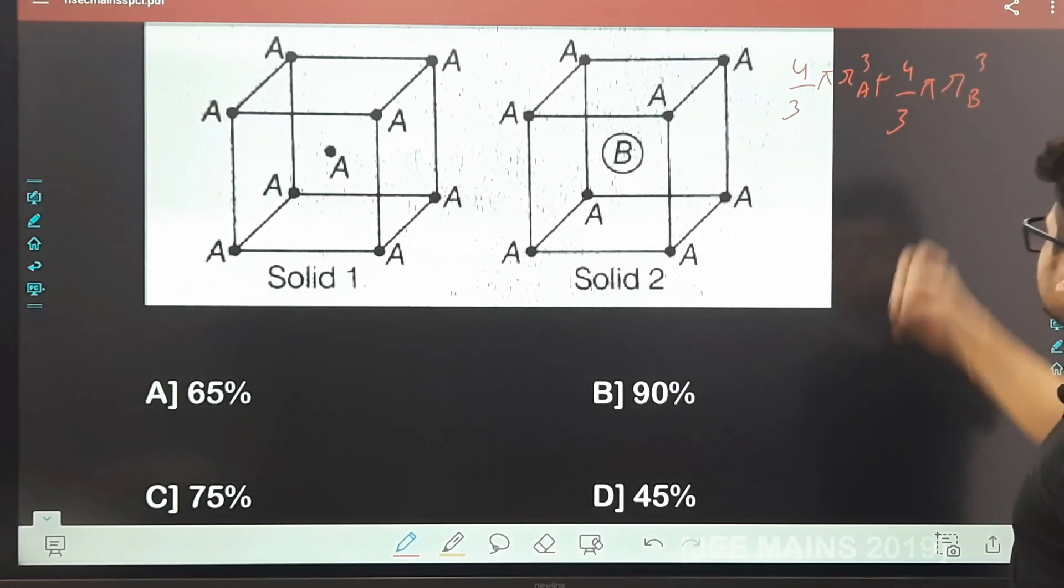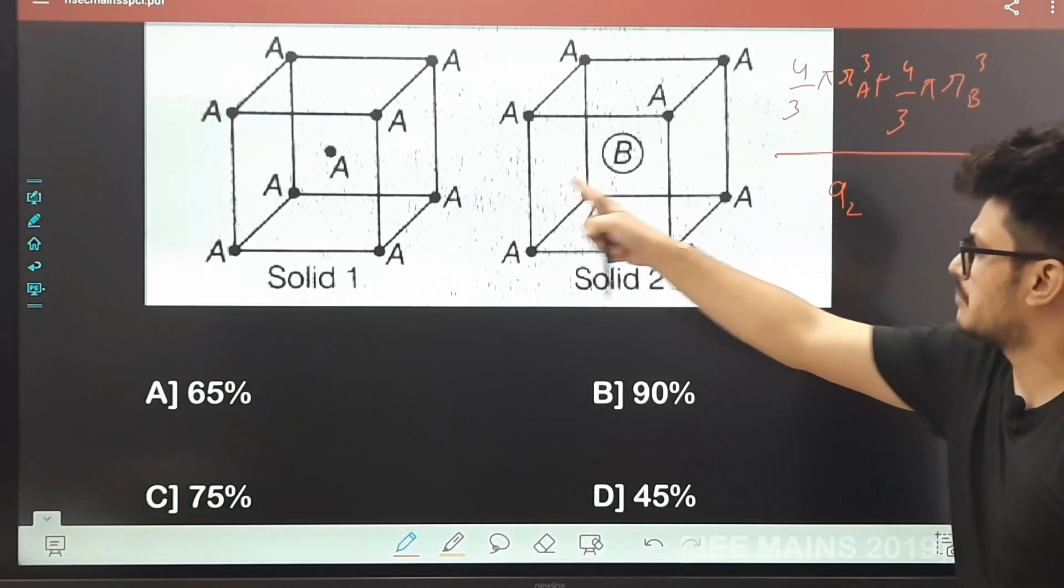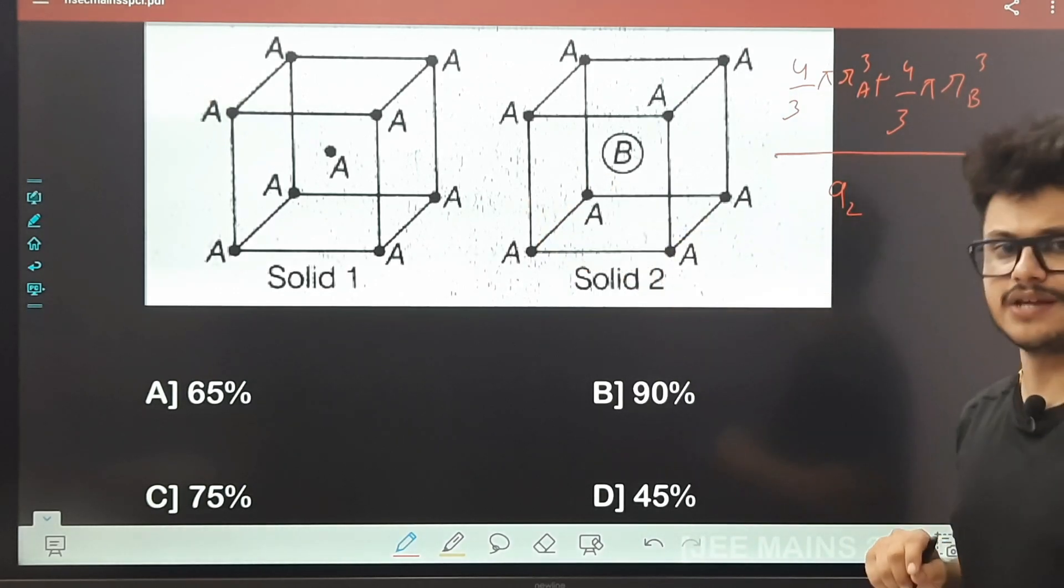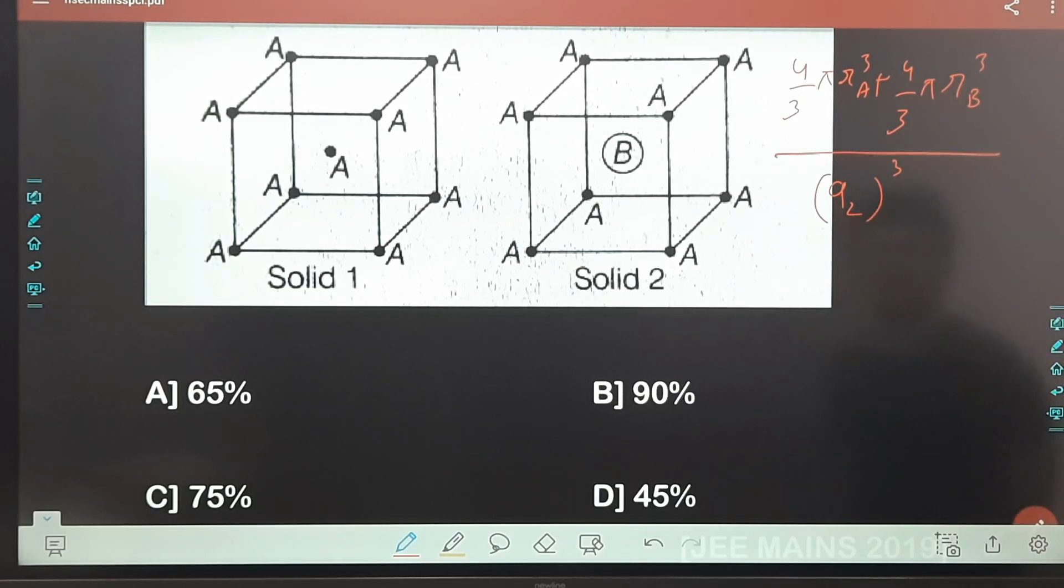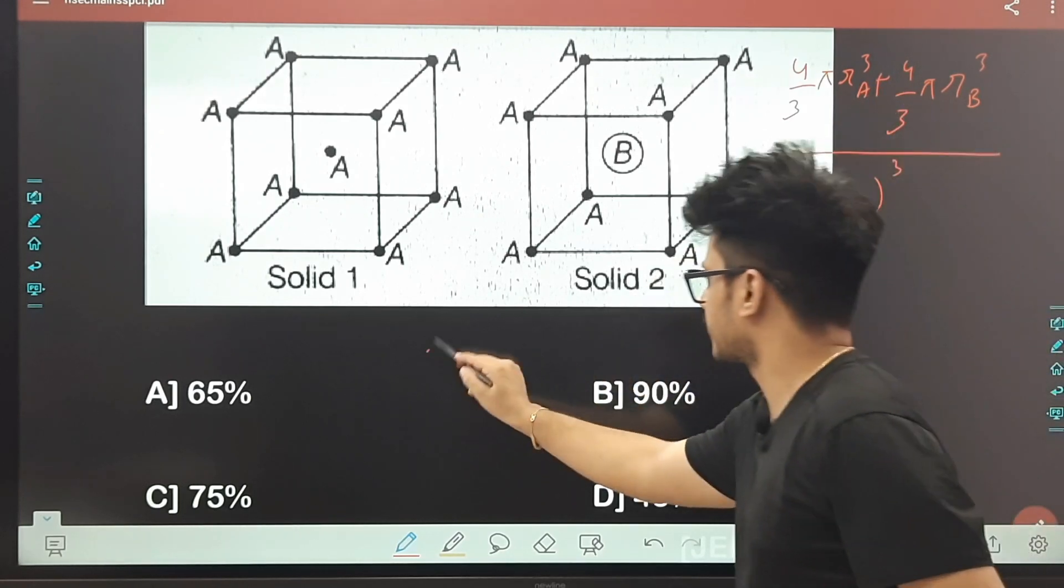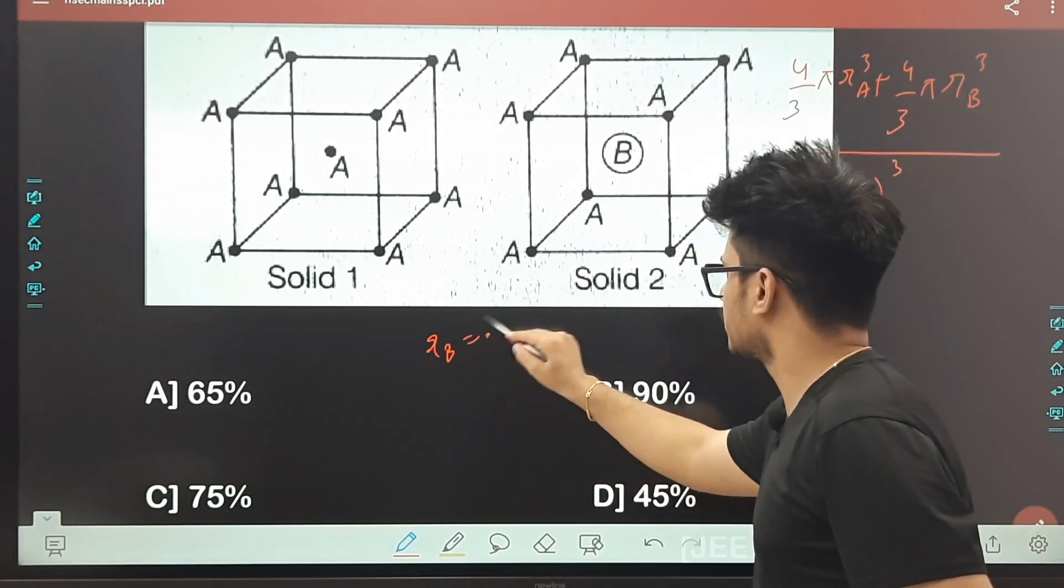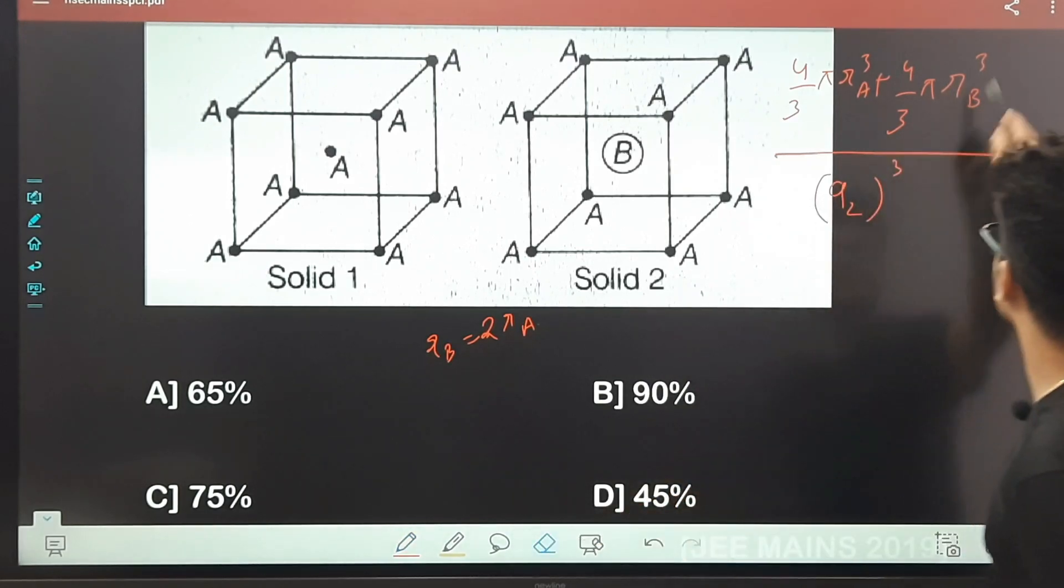Isko main a₂ maan raha hoon, isko a₁ maan raha hoon. Dono ke edge lengths ki baat kar raha hoon. Isko thoda simplify kar sakta hoon. Dekho, rᵦ jo hai wo rₐ ka double hai, ye pata hai. rᵦ = 2rₐ. Just yahan main put karunga.